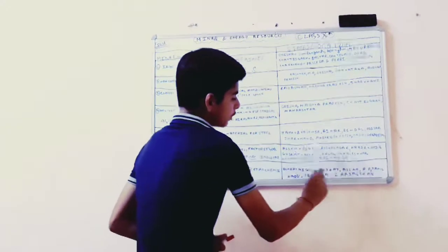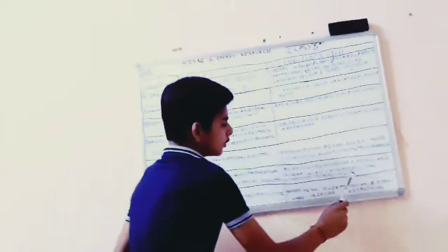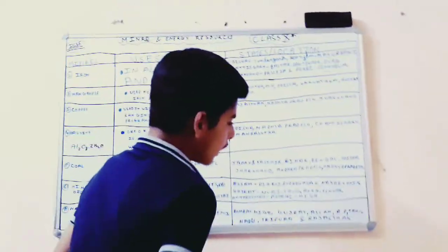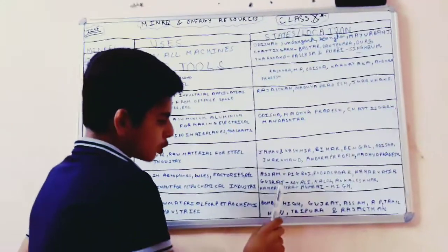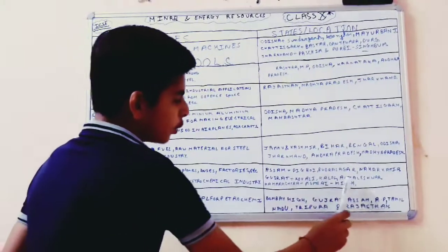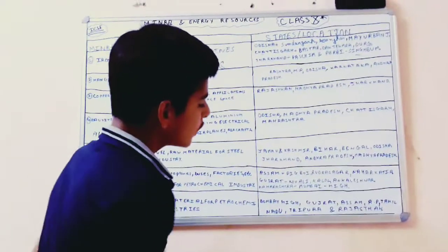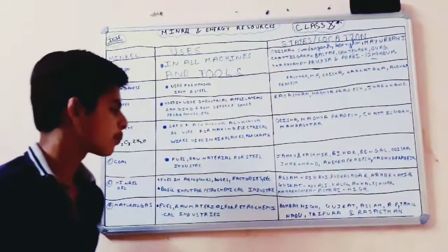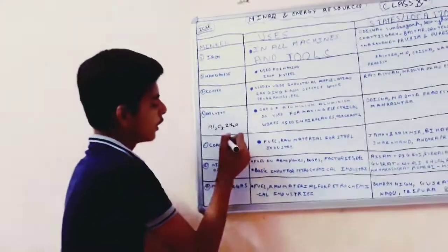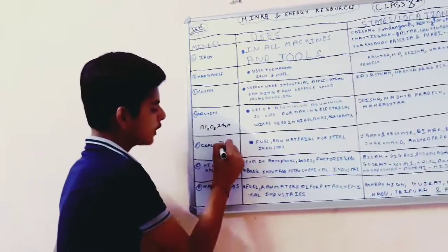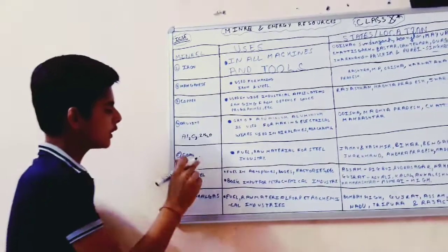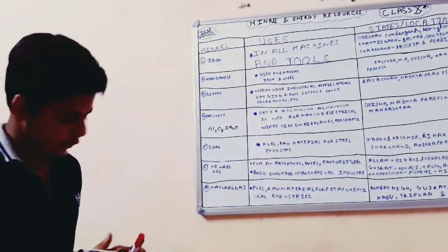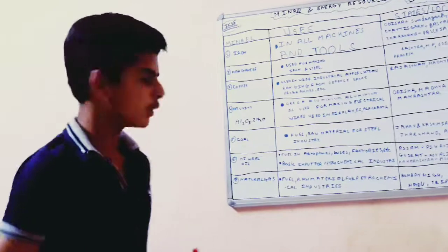Now, where is it found? Assam - Digboi, Naharkatiya; Gujarat, Maharashtra - Kovalli, Kalol, Kaleshwar, Mumbai High. It is situated here near the western coast of the Indian seacoast.